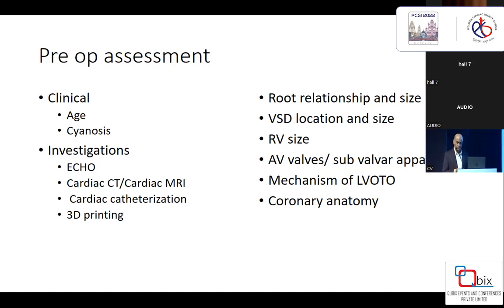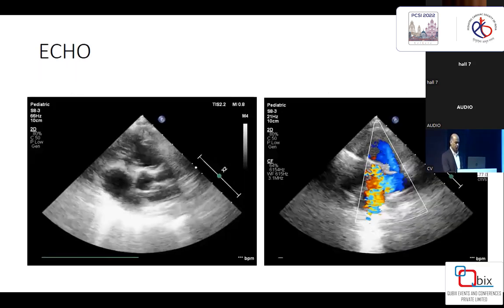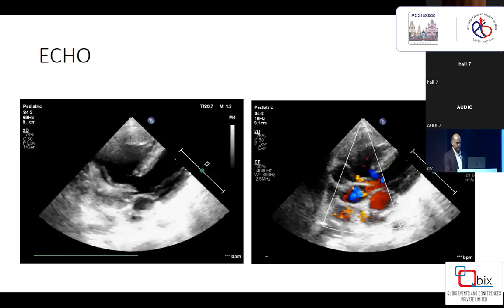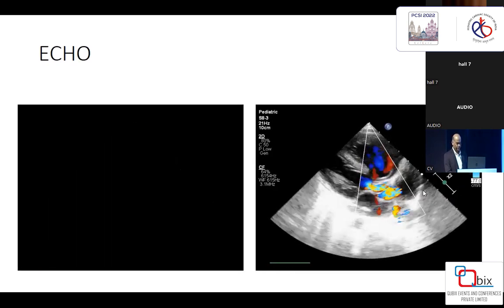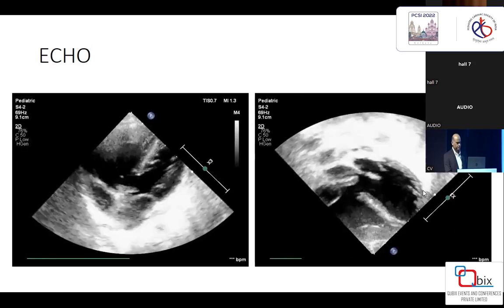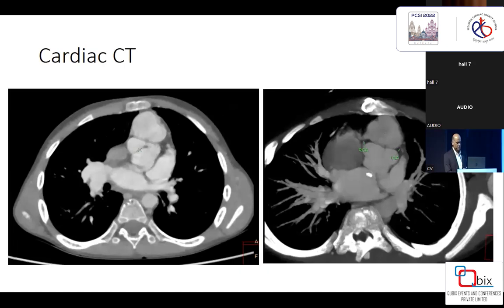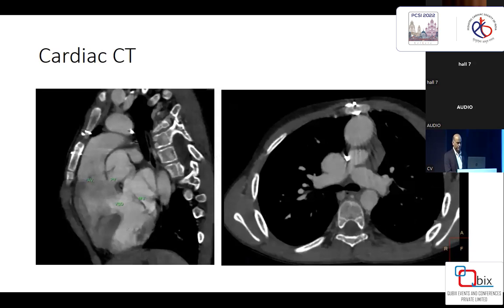Coronary anatomy is obviously essential. Most of these things can be obtained with a very good echocardiogram today, and most centers rely on echo alone, supplementing with CT scan where needed. CT is particularly useful for assessing branch pulmonary arteries — especially in children who have had prior palliation — coronary anatomy, 3D reconstruction, and even 3D printing for complex patients. Clinical factors such as age and the presence or absence of cyanosis also influence decision-making.